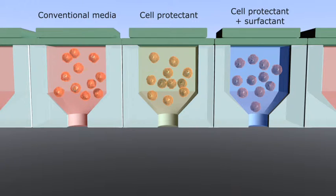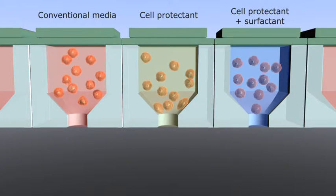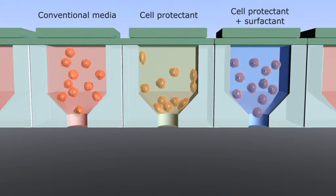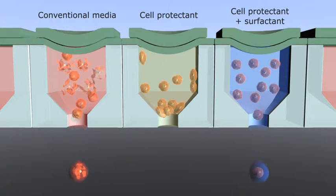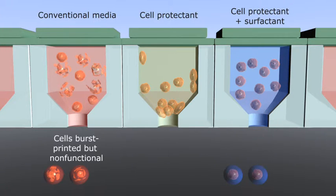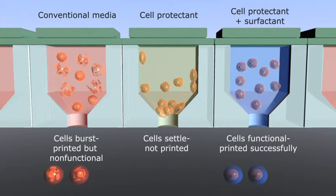Achieving cell printing requires some clever bio-ink formulations. If normal cell culture medium is used as the ink, the living cells can burst due to the high stresses of the jetting process.